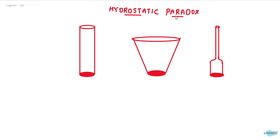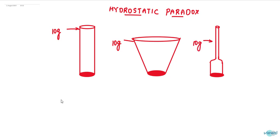We will understand the hydrostatic paradox with a small experiment in this video. I have taken three different shapes of glass tubes — one is a small container. Each one is 10 grams, and I am taking the same area A for all the containers.